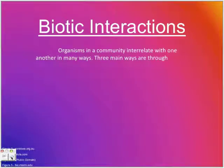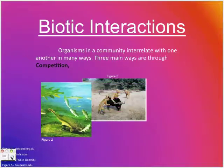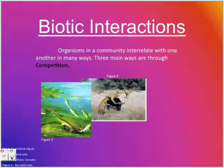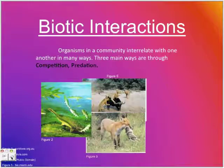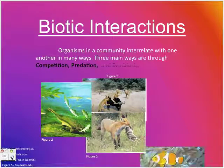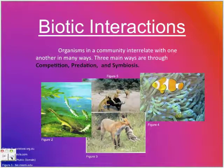Biotic Interactions. Organisms in a community interrelate with one another in many ways. Three main ways are through competition, predation, and symbiosis.